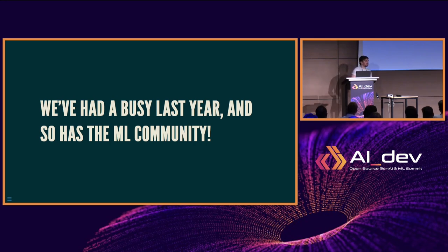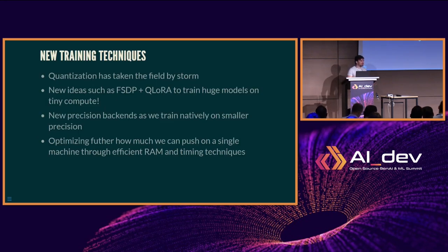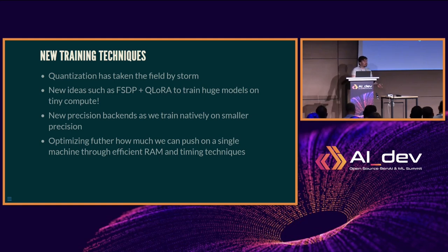It's been a very busy year in the ML community. We've had new ideas like quantization, huge models being released by Meta and NVIDIA. We've had quantization take the field by storm, and now everyone is realizing we can train using quantized methods like LoRA, QLoRA, or QDoRA. We can now train 70 billion parameter models on two 4090s — might be a little slow, but you can do that at home without a huge cloud compute bill.